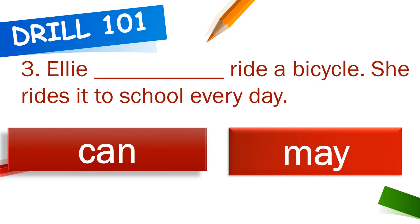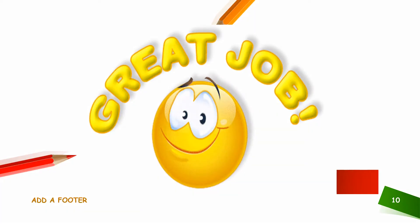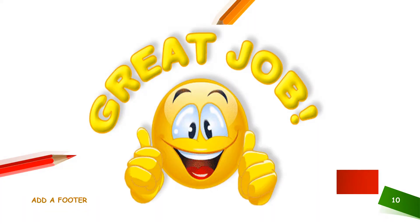Let's have the last review. Ellie blank ride a bicycle. She rides it to school every day. The choices are 'can' or 'may'. What do you think is the correct answer? Very good! The answer is 'can'.